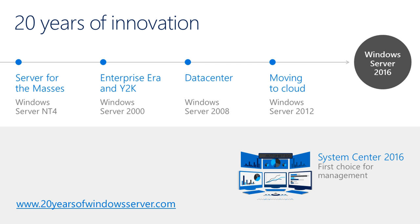Then of course we get to the data center era in Server 2008. This is where we started to get to a larger class of servers — instead of thinking about an individual server or a collection of servers, we started thinking about racks and racks of servers. We introduced virtualization and Hyper-V in 2008 and 2008 R2, which allowed us for the first time to run multiple operating systems on top of a single server. Virtualization really got popular starting around 2007–2008.